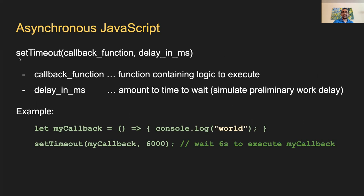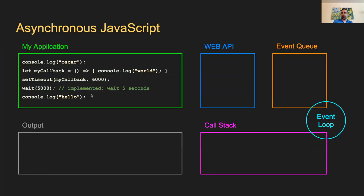For this example, I'm going to use a function called setTimeout — this is a function built into JavaScript. It takes in two parameters: one is a callback function — the function we want to call in the future — and the second is a delay in milliseconds, specifying how much time you want to wait before executing the callback. In this example, we create a callback that simply prints out the word 'world' to the console, and using setTimeout we say execute my callback after waiting 6000 milliseconds — six seconds.